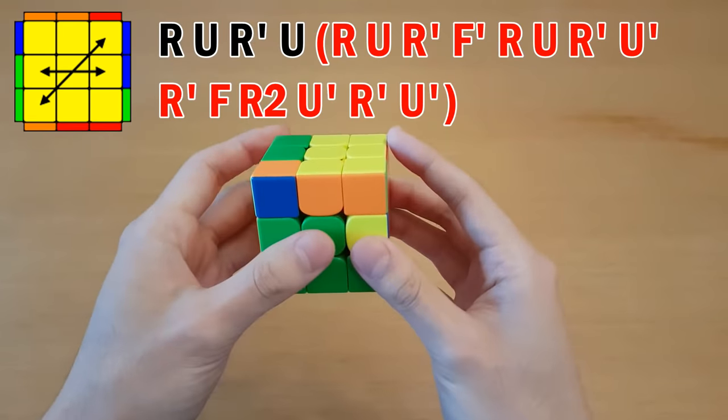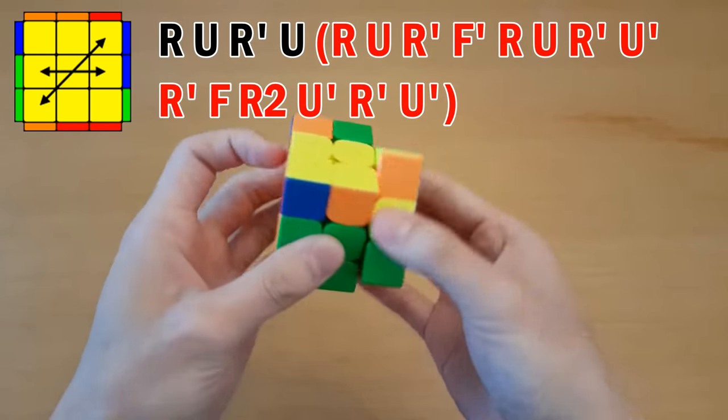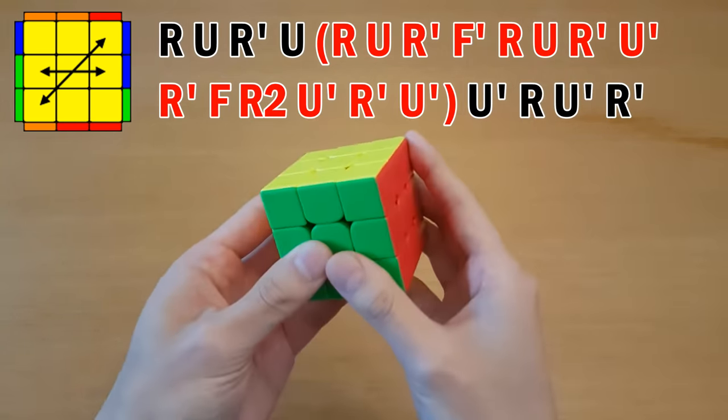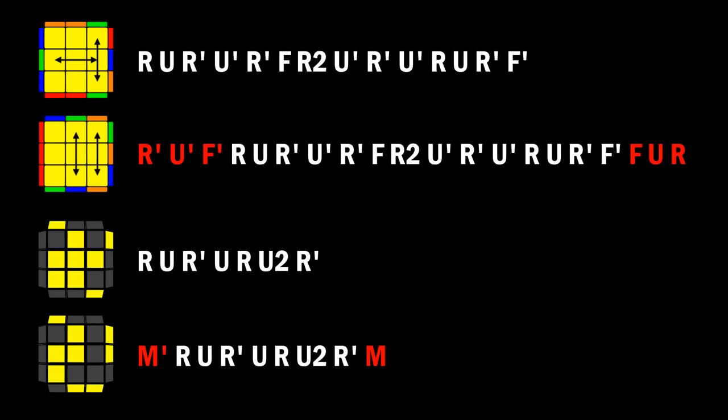Now if you do a J perm to solve these, and then undo those four moves, 1, 2, 3, 4, then you will solve that case. That is a conjugate because we're doing a setup move into an algorithm and then undoing the setup move. That allows us to solve a variety of cases using the same base algorithm.